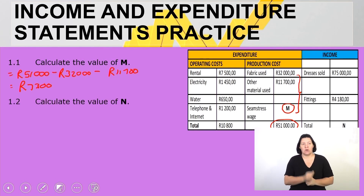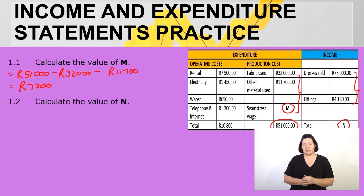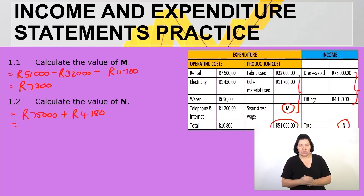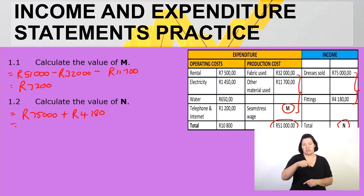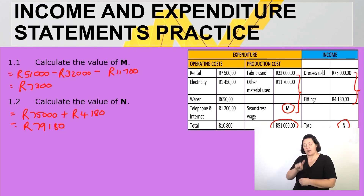For question 1.2, calculate the value of N, which is the total income. N consists of dresses sold and fittings. Taking 75,000 rand plus 4,180 rand gives a total income of 79,180 rand.